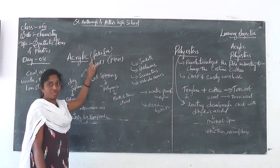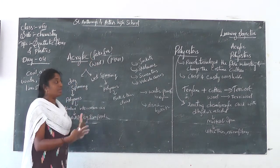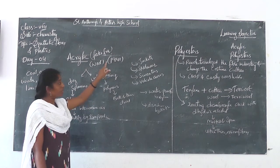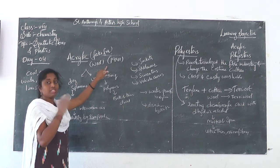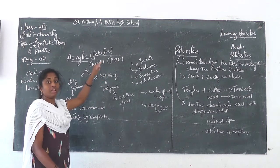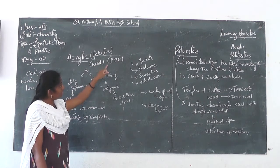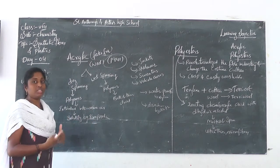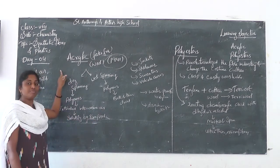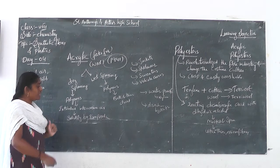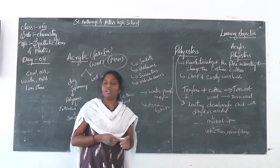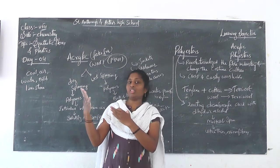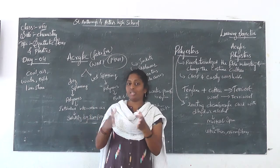Acrylic is known as fake wool, and it has been popular from the year 1941. It was established and became very popular during 1941, and from that time period onwards, we have been using acrylic. In the preparation process — which we already studied in previous classes — first of all, we are taking the polymers and treating them with many chemicals.